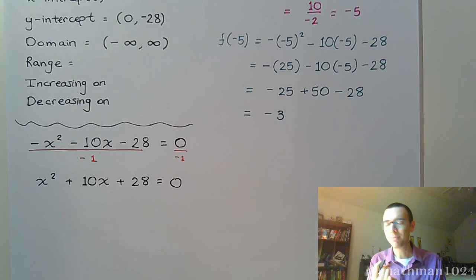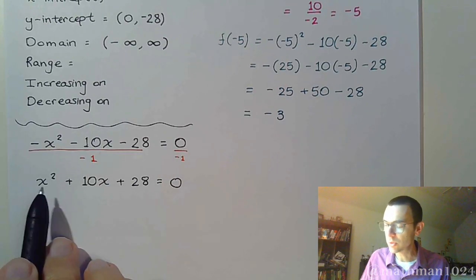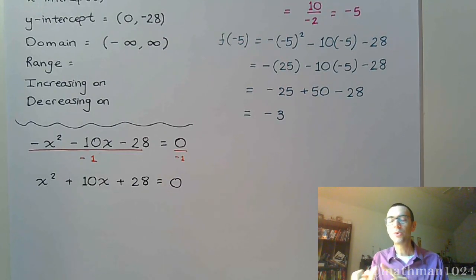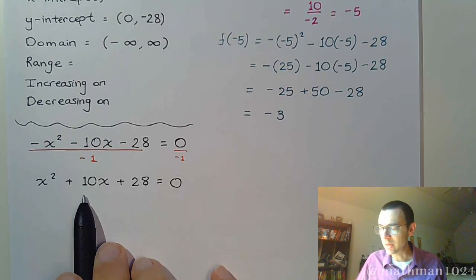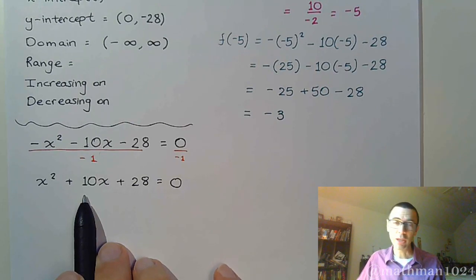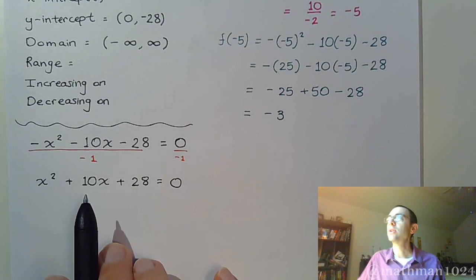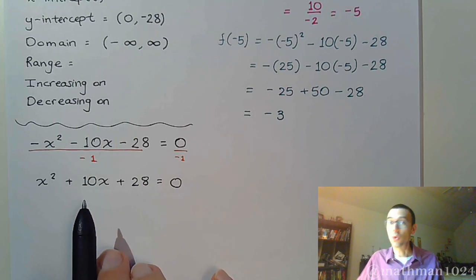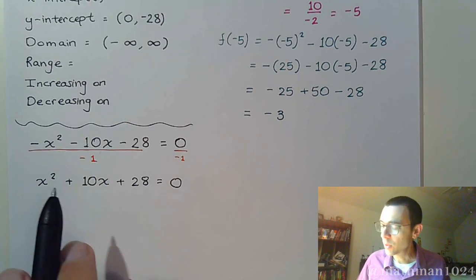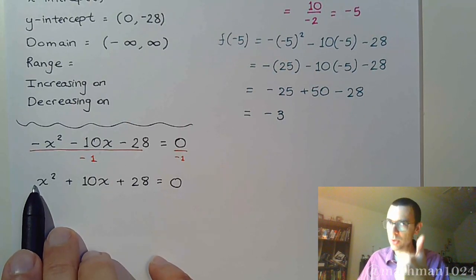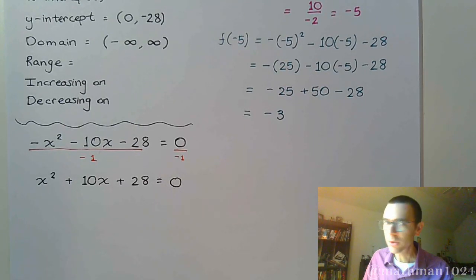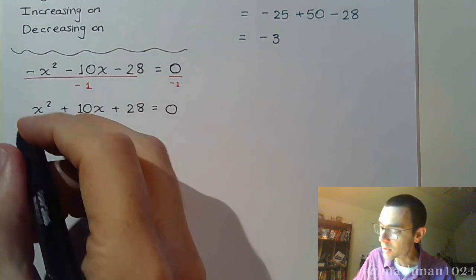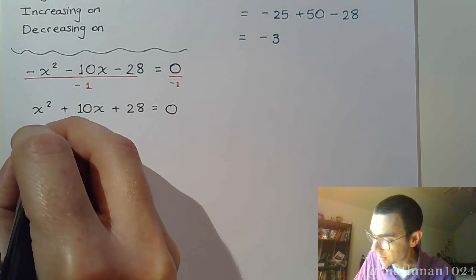Going through our progressions: first, can we use the square root property? No, because we have two terms containing x. Can we factor? We need factors of 28 that add to 10. We get close with 4 and 7, but they add to 11, not 10. So factoring doesn't work. We'll use completing the square, which works great here since the leading coefficient is 1 and the middle coefficient is even.